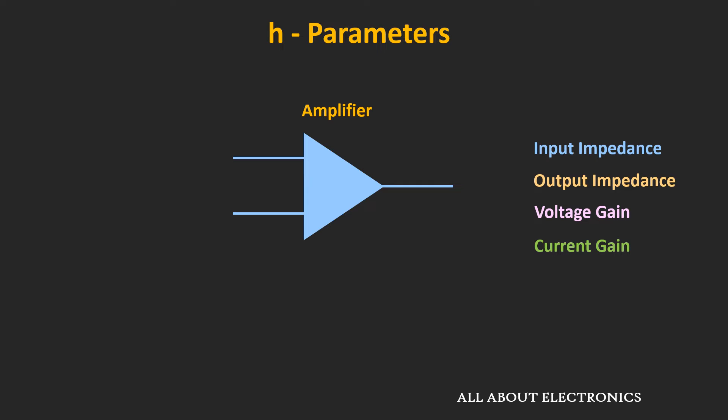In electronics, the H parameters are very useful in determining some of the amplifier characteristics. For example, they are very useful in determining the input and output impedance as well as the voltage and current gain of the amplifier. In fact, these H parameters are very useful during the small signal analysis of the transistor.